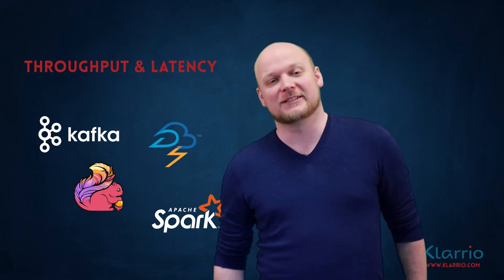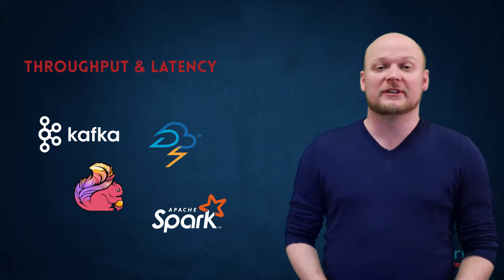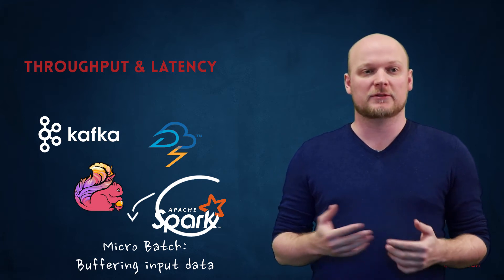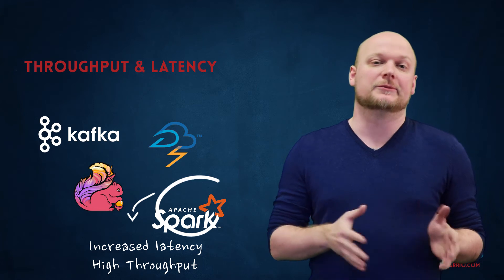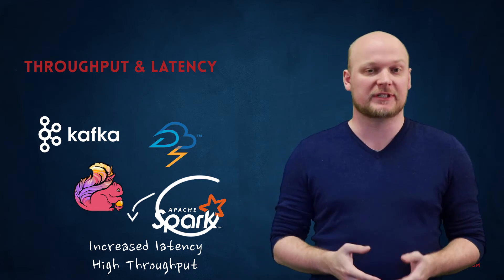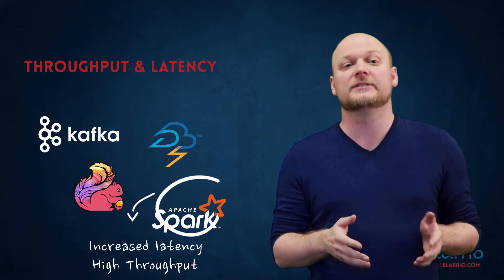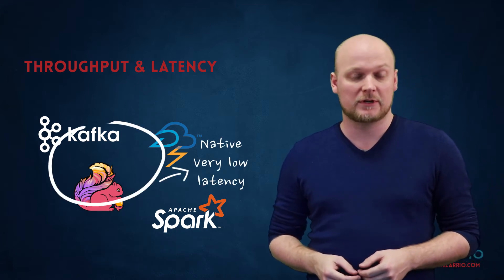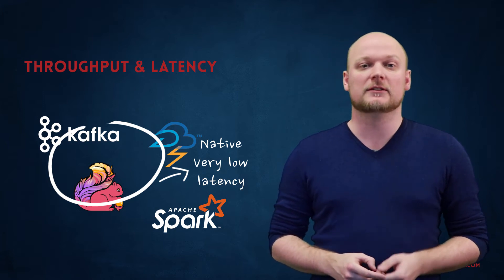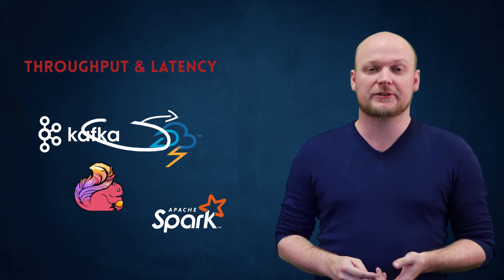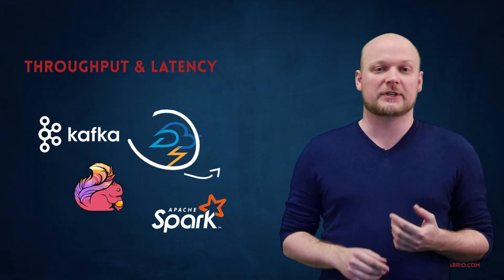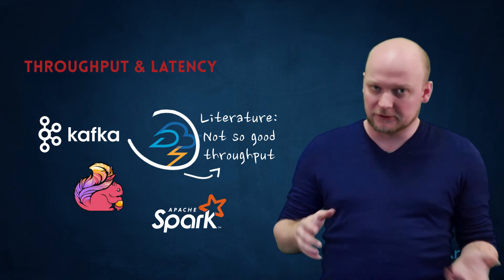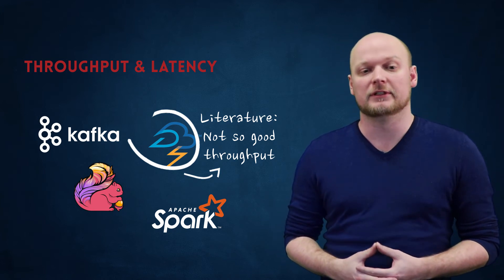Next up is the throughput and latency of these frameworks. For latency, Apache Spark due to its micro-batch nature loses an edge here because it needs to wait until the end of its window before it can do its computations, so latency is always going to be higher than in a native stream processing framework. For Flink, Kafka Streams, and Storm we can go down to really low latency numbers with high throughput, except for Storm, which in literature usually needs a lot of extra configuring and dirty work inside the code to handle higher load and throughput.